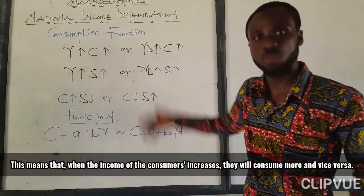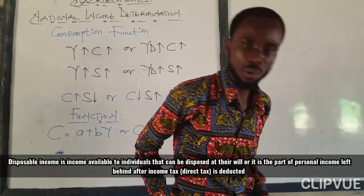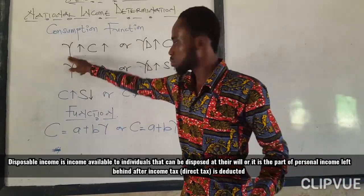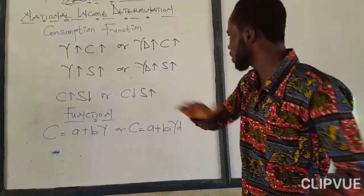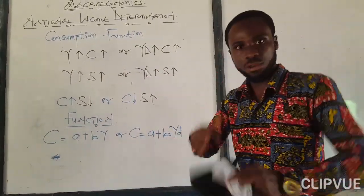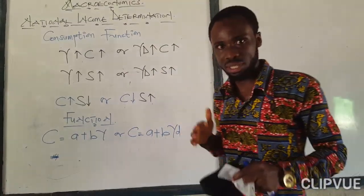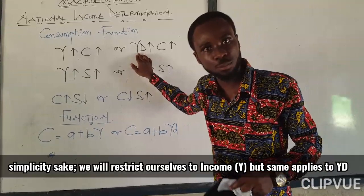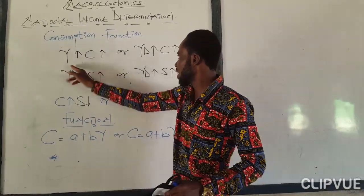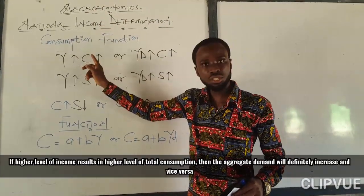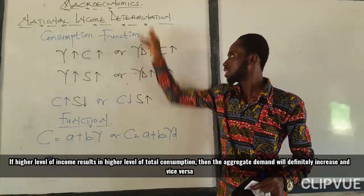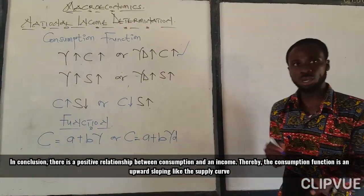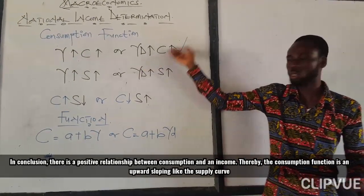Disposable income is the money or the income that is already in the pocket of the household, to be disposed of at his or her own will. If I use 'income,' have it at the back of your mind that it also applies to disposable income. When income increases, disposable income also increases, and when disposable income increases, consumption also increases. So we can conclude that there is a direct relationship between income and consumption.